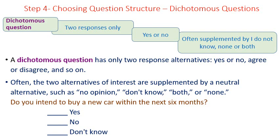Dichotomous question: two responses only — yes or no — and often supplemented by 'I don't know,' 'none,' or 'both.' Example: 'Do you intend to buy a new car within the next six months?' — Yes, No, or I do not know.